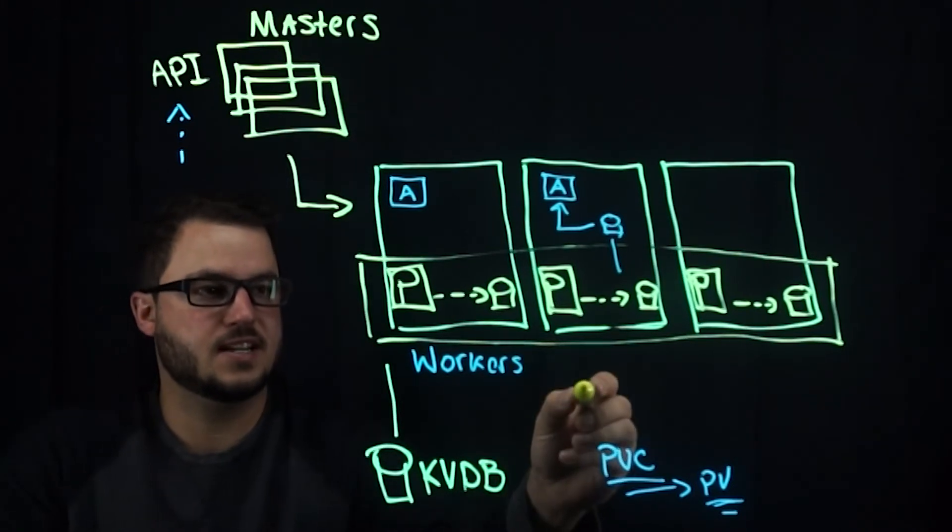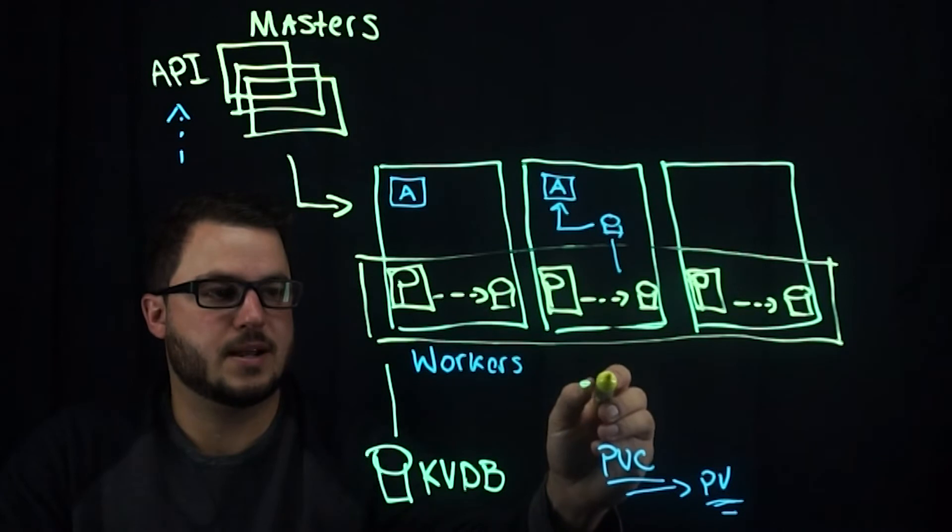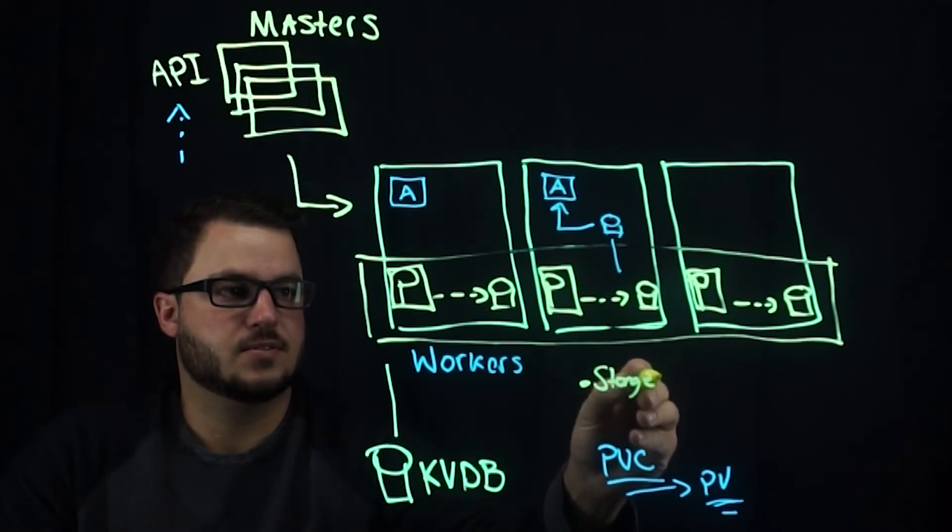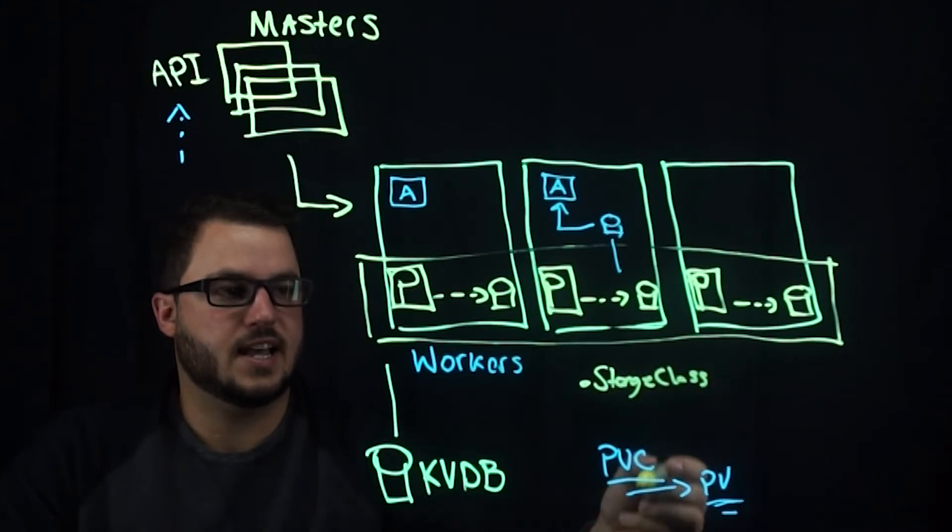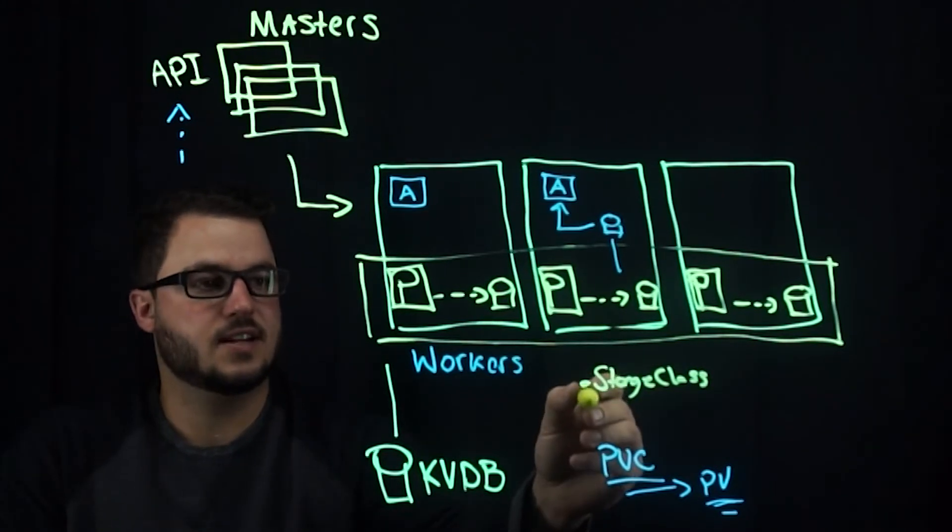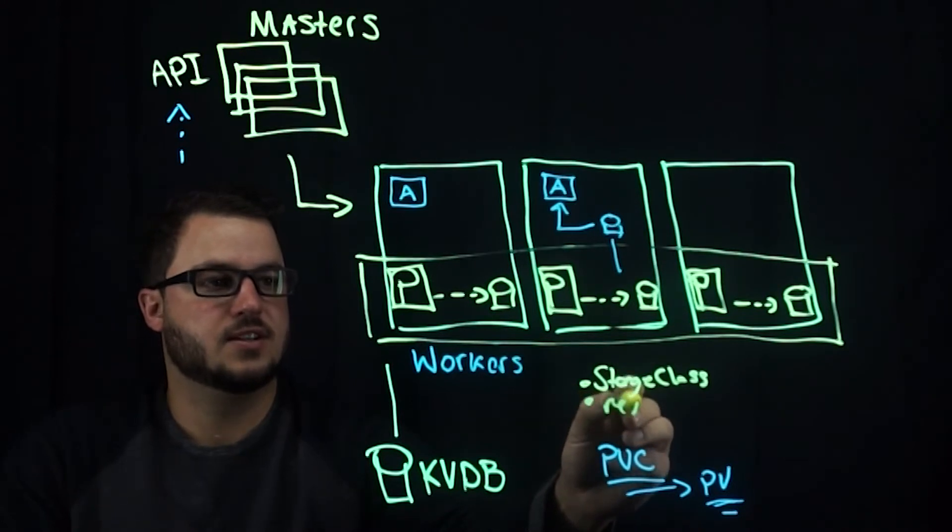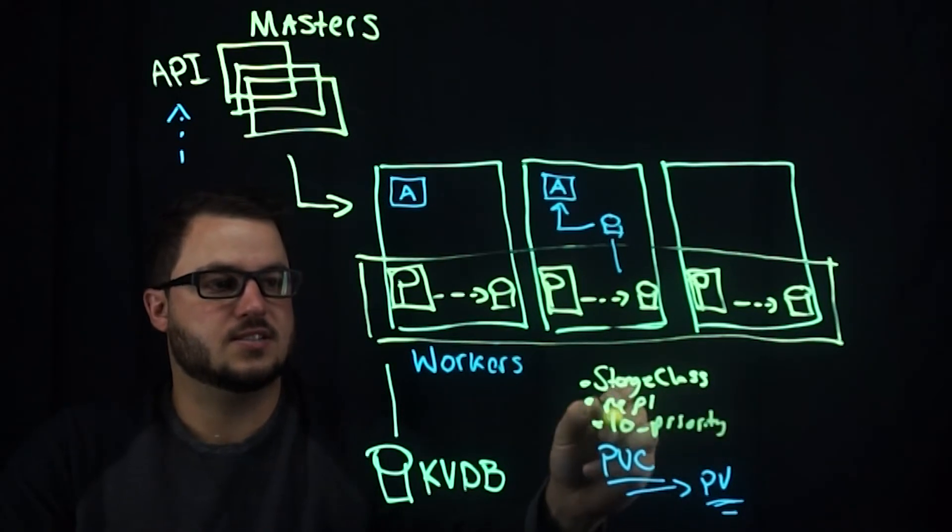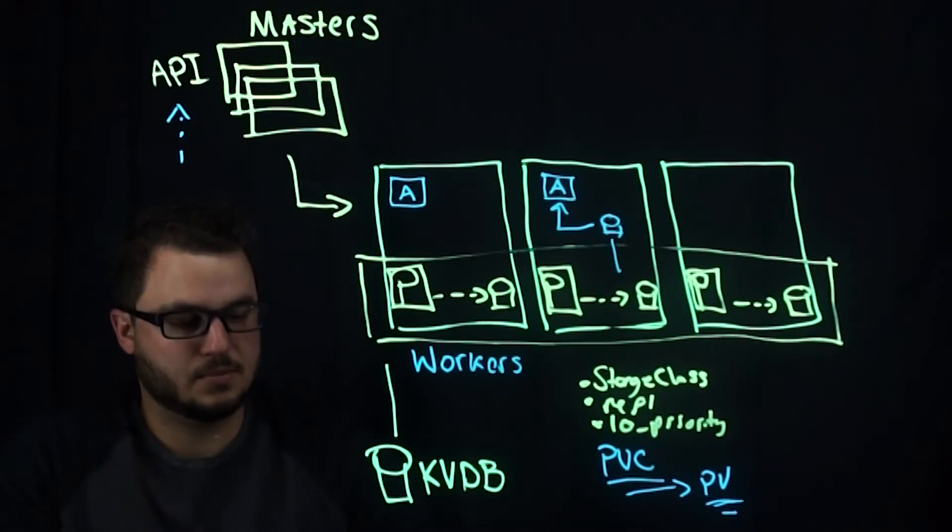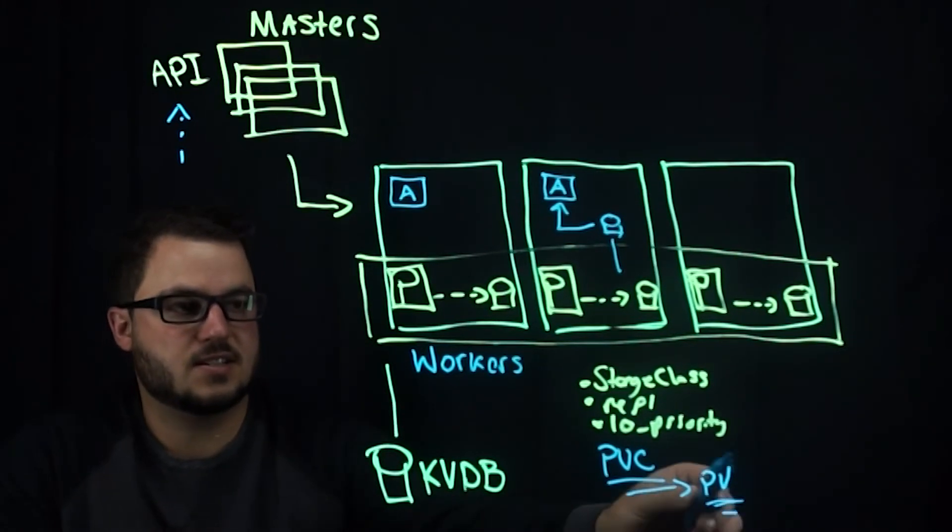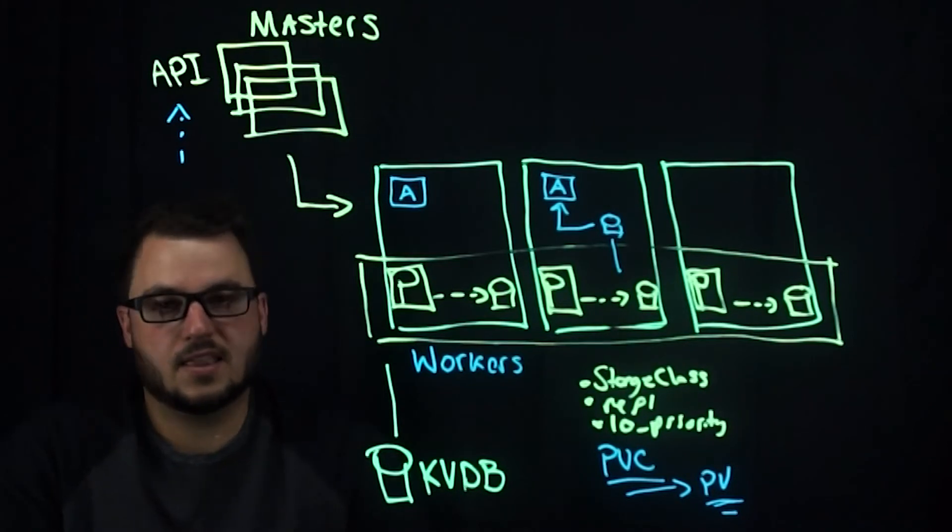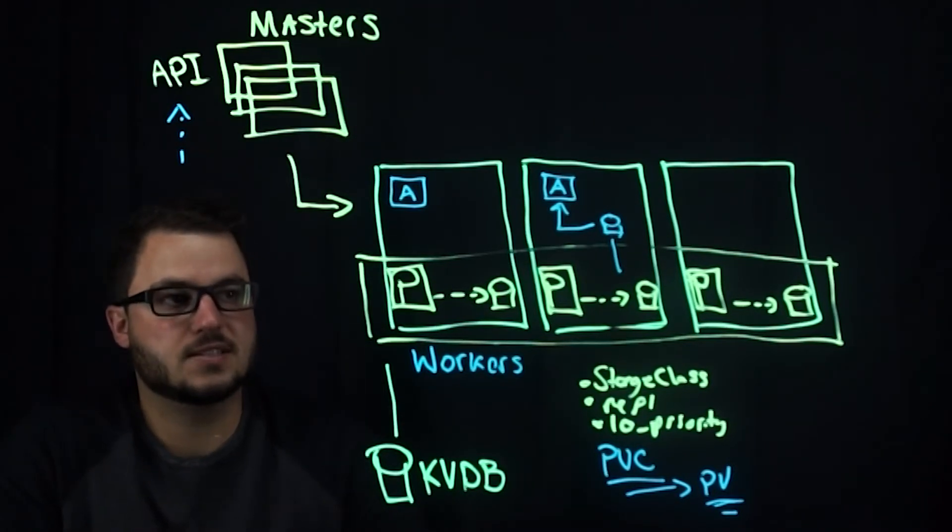In your PVC, you can specify parameters. Storage class is going to be needed and will point to a Portworx storage class. Then there are parameters such as replication and IO priority. This all happens in a persistent volume claim. The PV is actually something you don't have to create—dynamic provisioning will create that for you and track the actual volume itself.